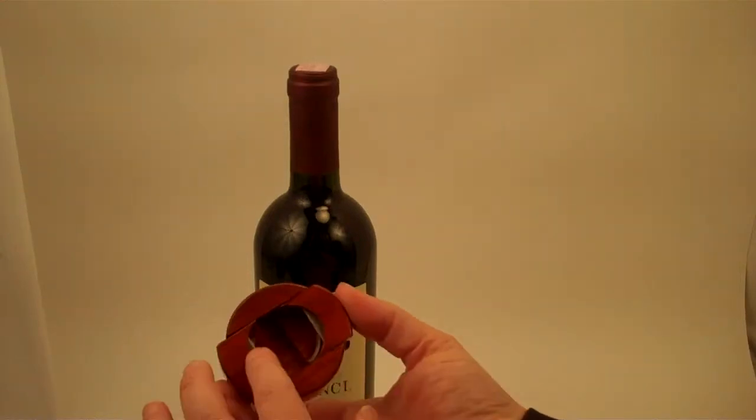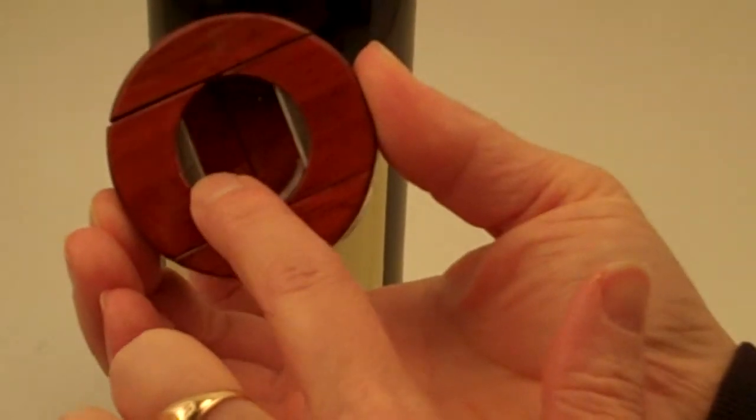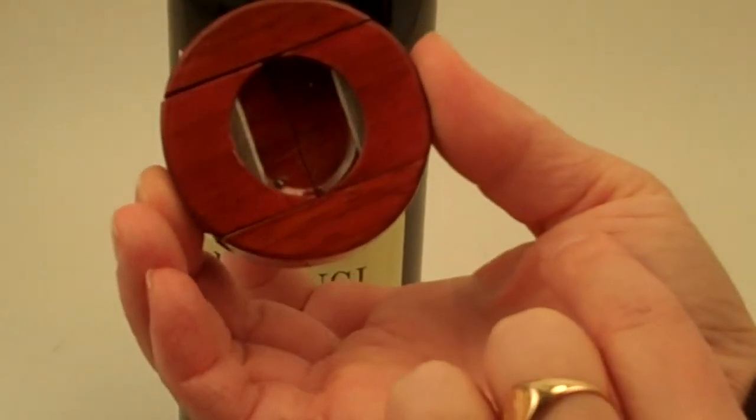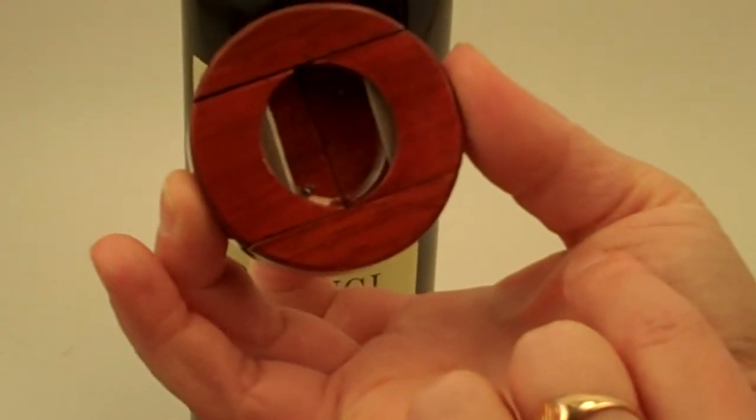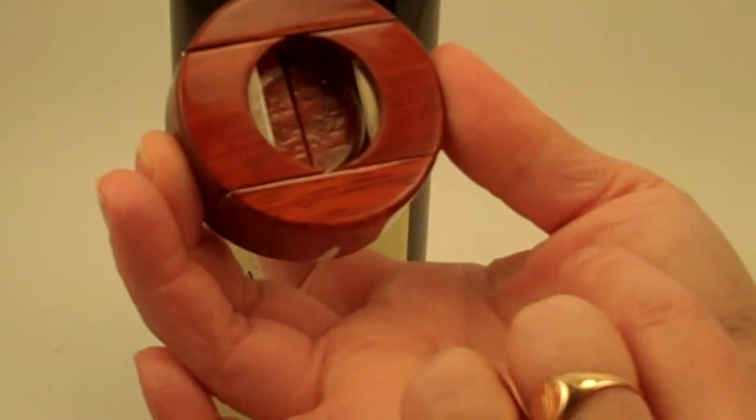The spring action is right here on both sides so the spring action moves the cutters in with the pressure of two fingers to cut the foil neatly from the neck of the bottle of your wine.